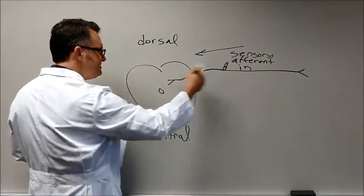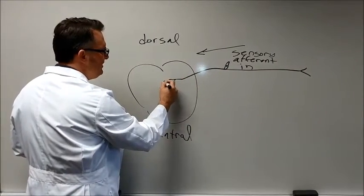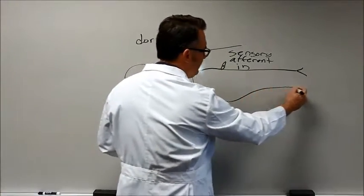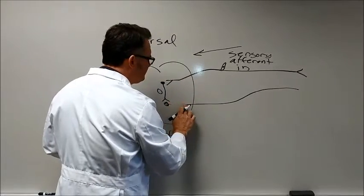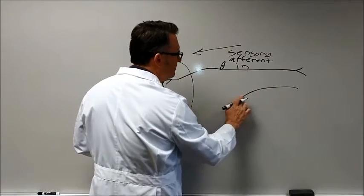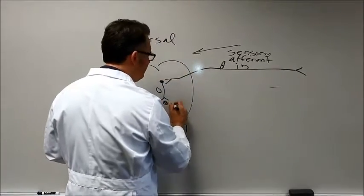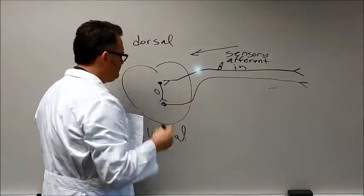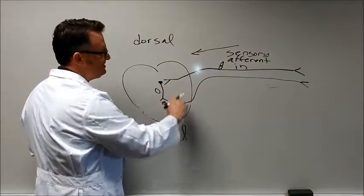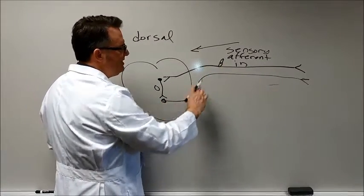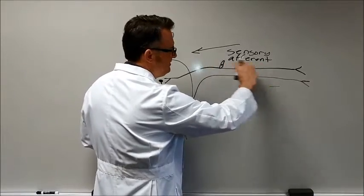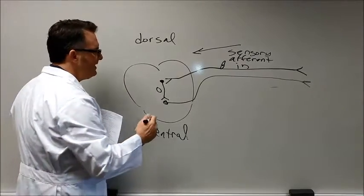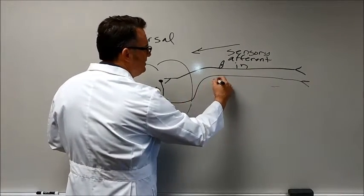It is an afferent sensory nerve, and it is carrying information into the central nerve system. Once this information arrives, there may be an interneuron that connects to a motor neuron, which then goes back out to the periphery. I'd like to draw it like this. Once this nerve exits, this ventral nerve, it's going to merge and go back out the same way that sensory nerve came in.